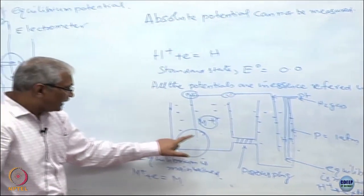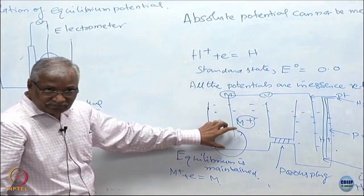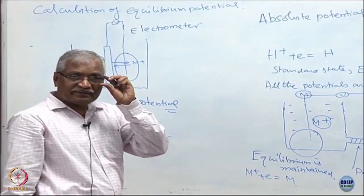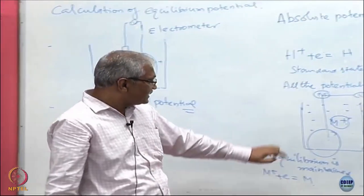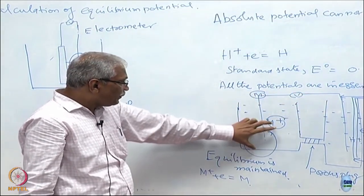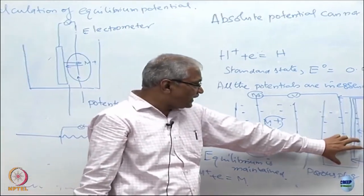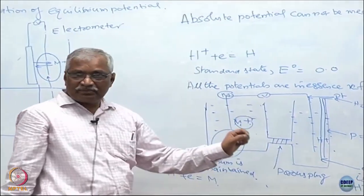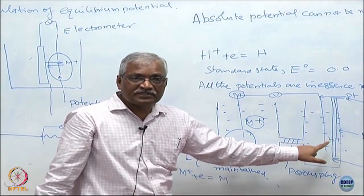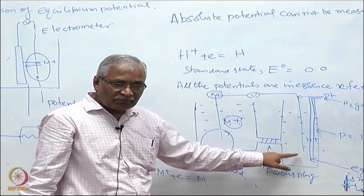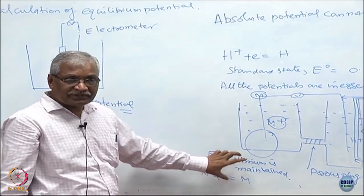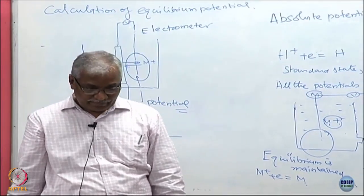I am going to measure the voltage, and that voltage is equal to the equilibrium voltage or equilibrium potential. As long as the current does not flow and the equilibrium is maintained at both sides, the voltmeter is measuring the potential of this equilibrium with respect to the hydrogen equilibrium. Since I have set the hydrogen potential equal to zero, whatever value you measure is called the equilibrium potential.